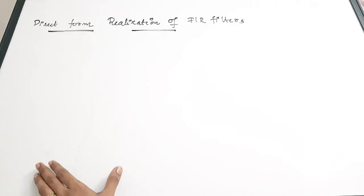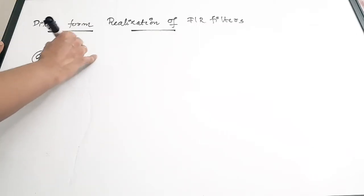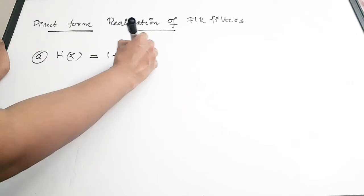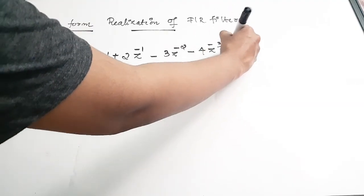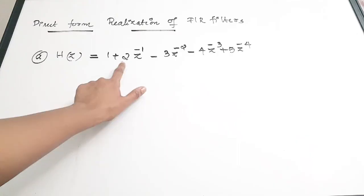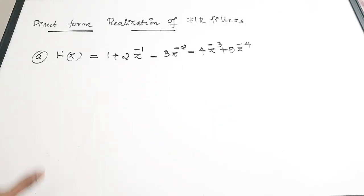So how do we do a direct form realization? We will directly do a question — it is very simple. For realization, we will be given a transfer function H of Z. I am going to take the transfer function H(Z) = 1 + 2Z⁻¹ − 3Z⁻² − 4Z⁻³ + 5Z⁻⁴. The values 1, 2, −3, −4, 5 are all constants, and these constants are written as branch weights in the block diagram.